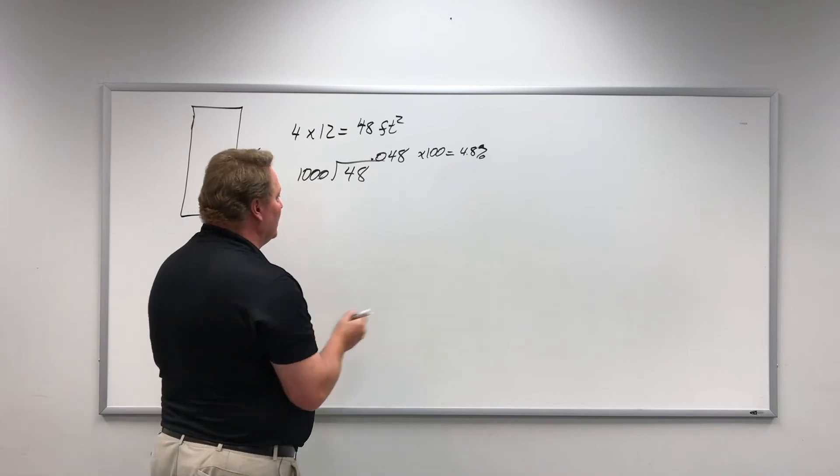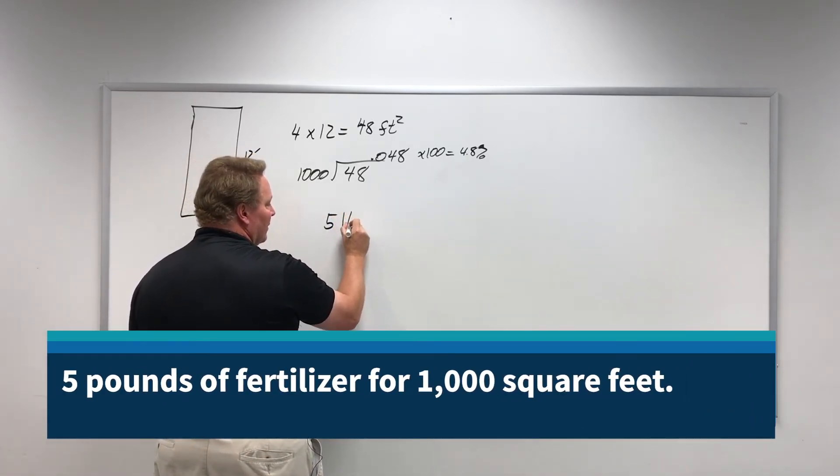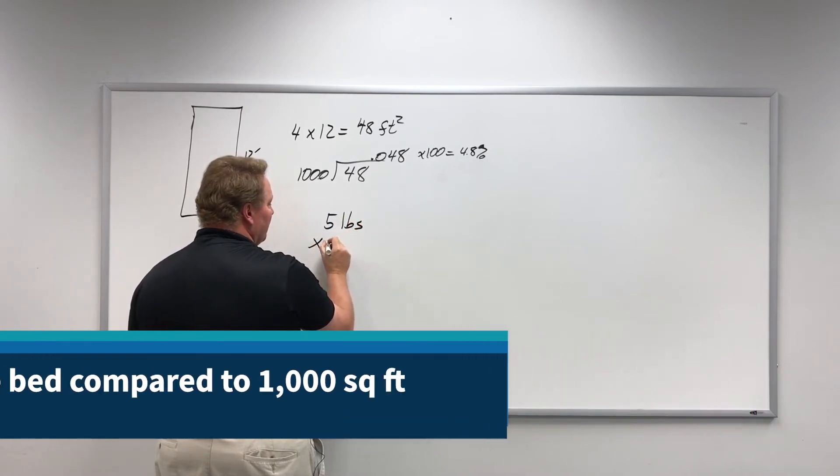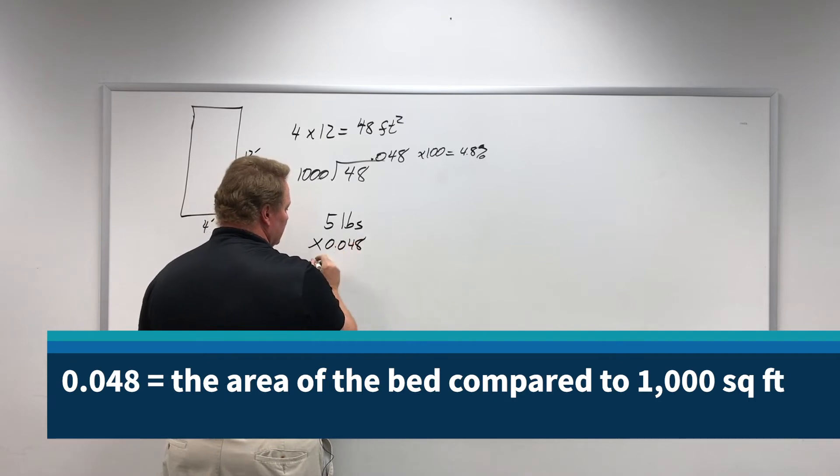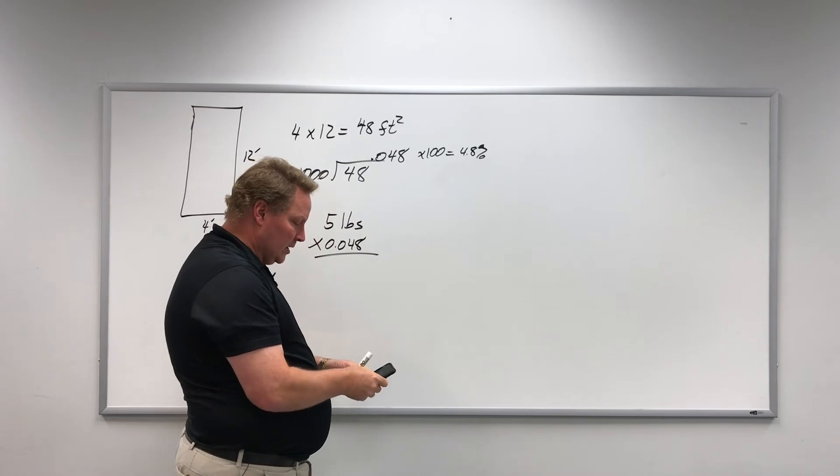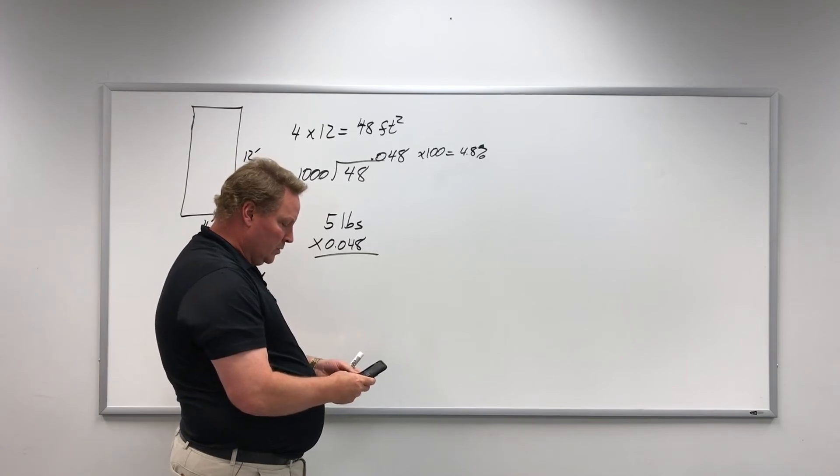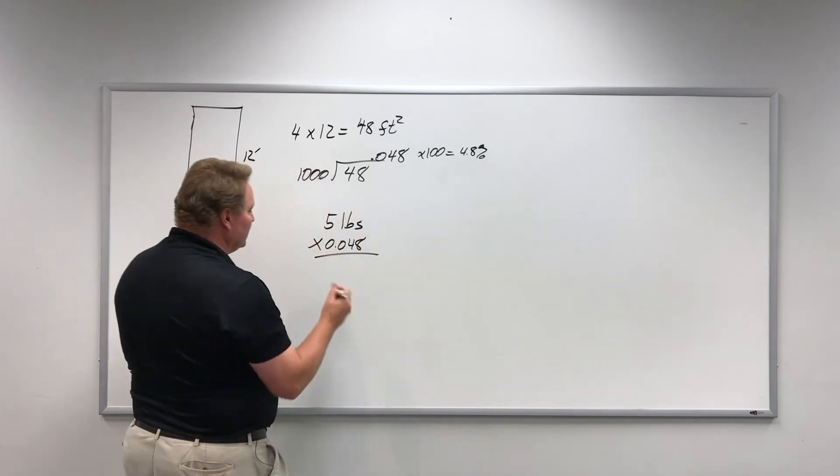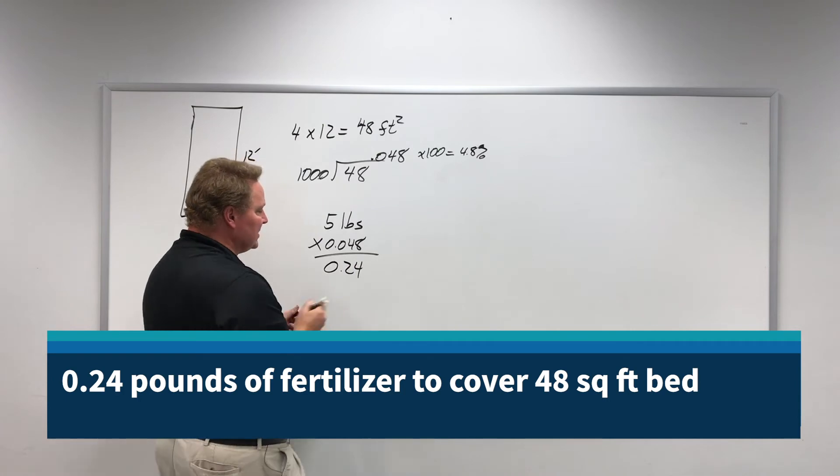So here's some more math for us. We take the five pounds that is recommended and we multiply that by 0.048. I'm not very good at doing math in my head, so I'm going to pull out my trusty calculator here. Five times 0.048, and we get 0.24 pounds.